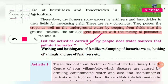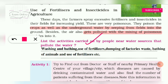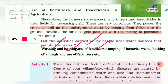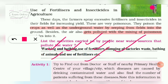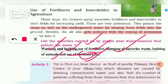Question 1: List the activities carried out by people near water resources. People wash clothes, take baths, use fertilizers and insecticides, and dump factory waste near water resources. These are the main activities that pollute water.